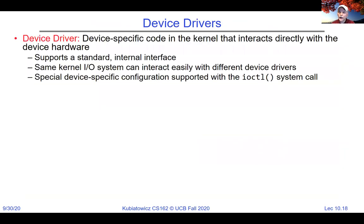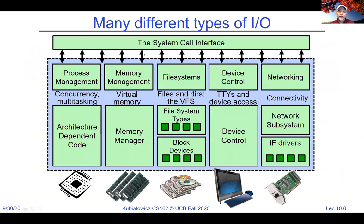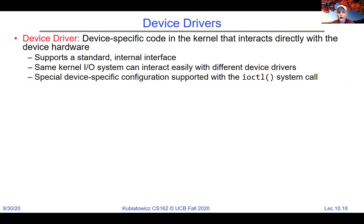There are many different types of I/O. At the bottom, we have devices, and somewhere in the middle we need things that know how to interface with each device's unique characteristics while providing a standardized interface up to the kernel. Those are called device drivers. A device driver is device-specific code in the kernel that interacts directly with the device and provides a standardized internal interface upward — closely matching the file operations we discussed.